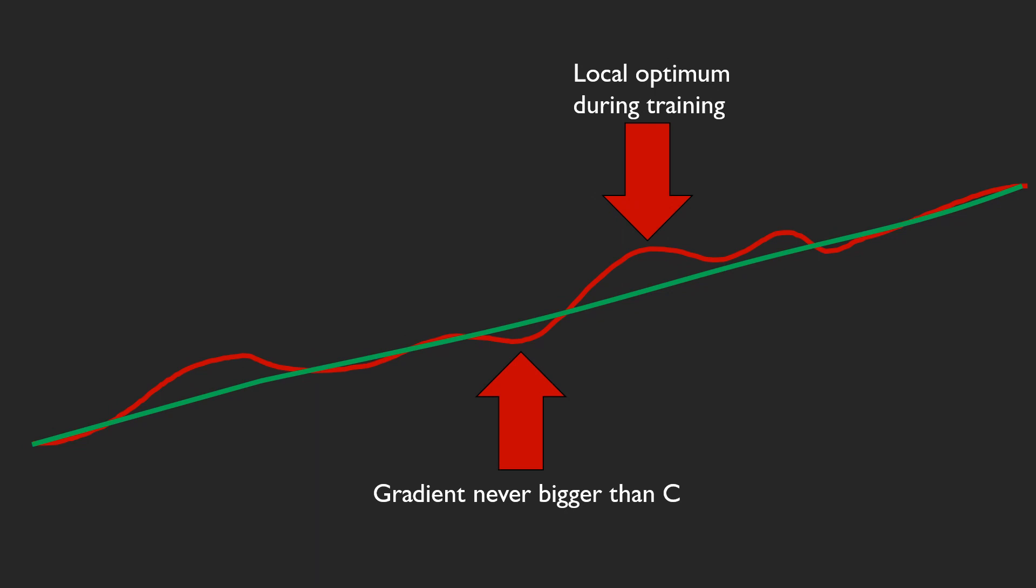Now, before you run off and use that knowledge, don't. Because there is an even better regularization technique. Lipschitz continuity prevents you from having steep changes in the loss. But it does not prevent local optima or the function changing only slowly or not at all. Much better than that, we can simply say that our network should not be Lipschitz bound, but instead also exactly change by some constant relative to the input change. Meaning, our regularization term is just enforcing a constant gradient. For example, one, everywhere.